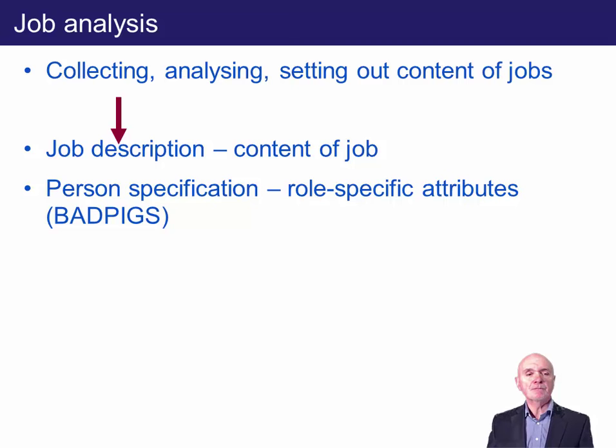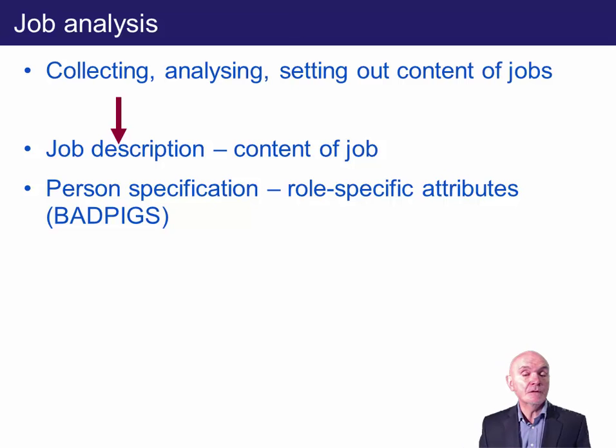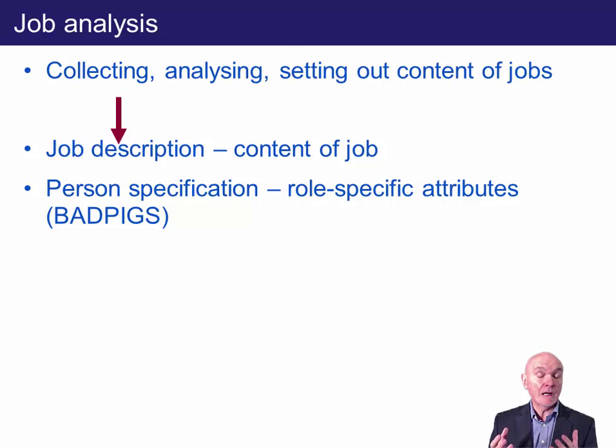P is physical — not relevant for many jobs, and we have to be careful not to discriminate against people who may be disabled. But for some jobs, physical attributes are very relevant. For example, airline pilots have to have good eyesight and they can't be colour blind — they have to know the red and the green.